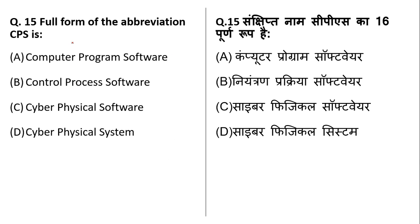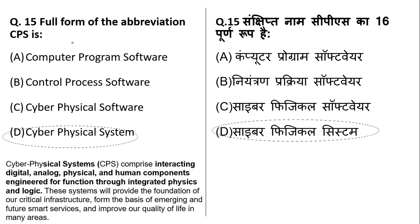CPS stands for Cyber Physical System. It comprises interacting digital, analog, physical, and human components engineered for function through integrated physics and logic. This technology is used in mobile phones and automatic cars.